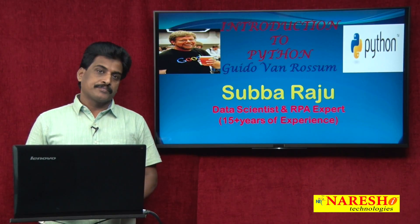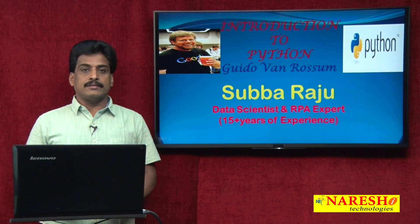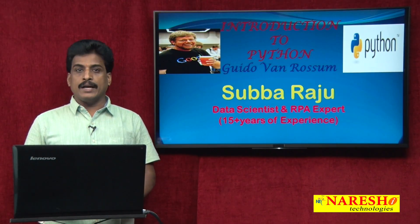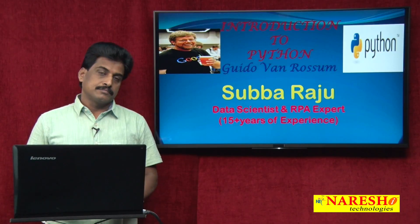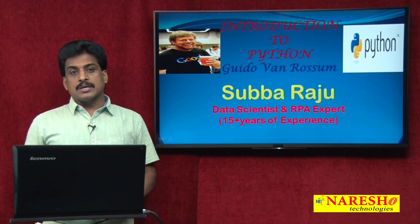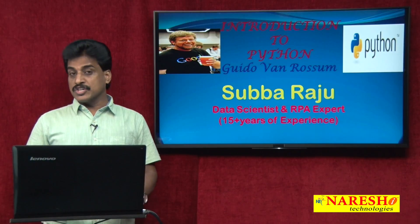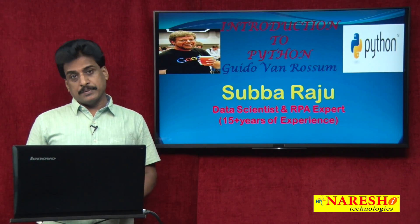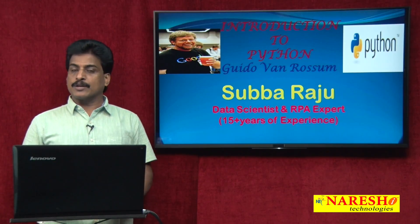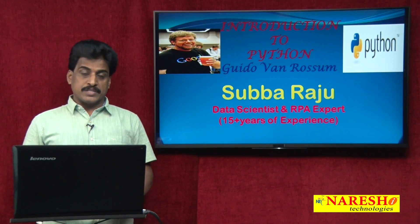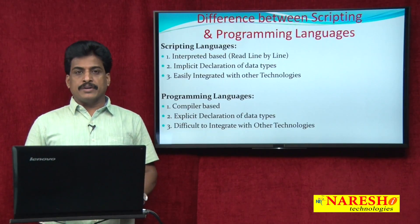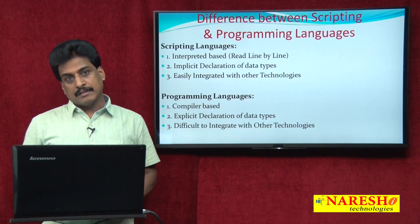ASP requires IIS; JSP requires Tomcat or other web servers; Python uses servers like Jigsaw or HTTP servers. Every server-side scripting language requires a specific web server. So we can now view the differences between scripting and programming languages.